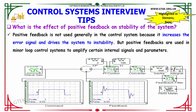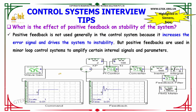What is the effect of positive feedback on stability of a system? Positive feedback is not generally used in control systems because it increases the error signal and drives the system to instability. However, positive feedback is used in minor loop control systems to amplify certain internal signals and parameters.